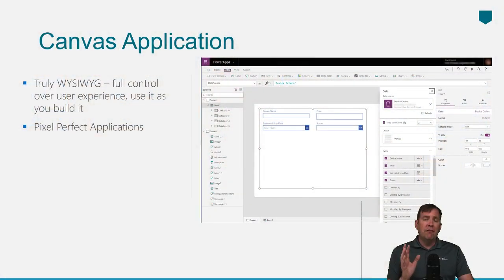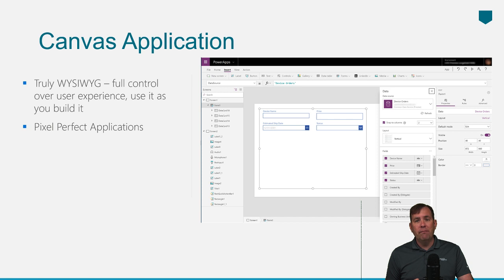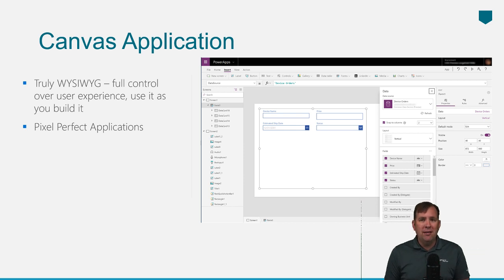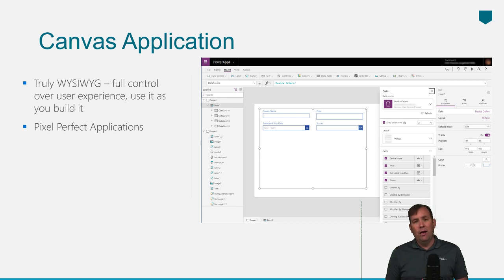I wanted to create this quick video to show the differences and talk about, at a high level, when would you build one versus the other. Canvas applications are the most common application type we see inside of Power Apps. They come in two flavors — you can build a tablet application or a phone application, and it works on the PC, inside of SharePoint, and on other devices as well.